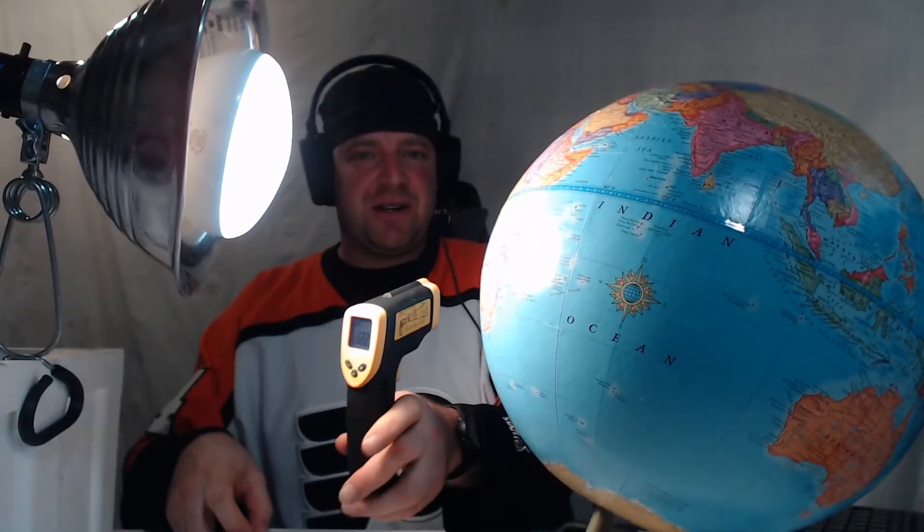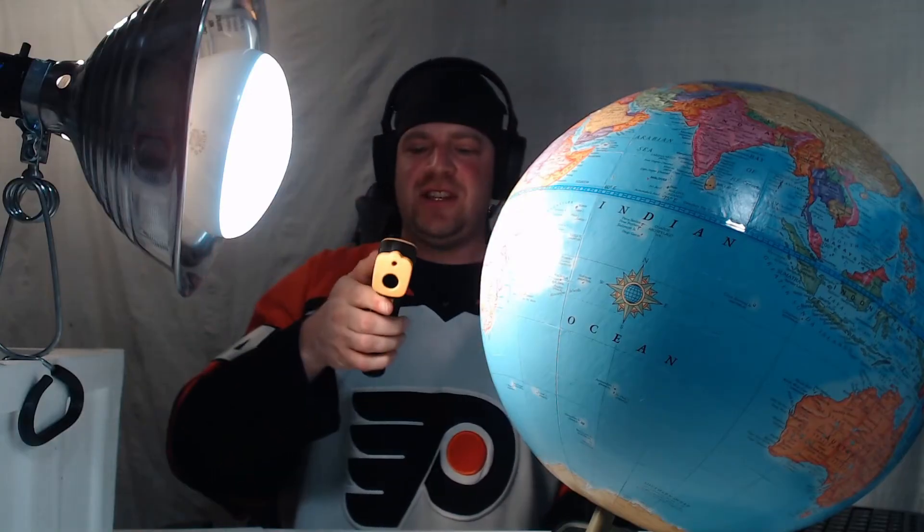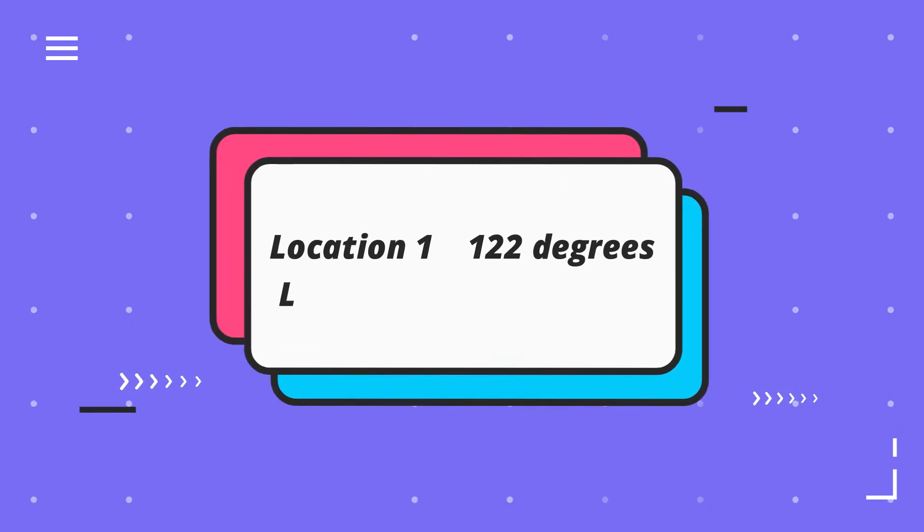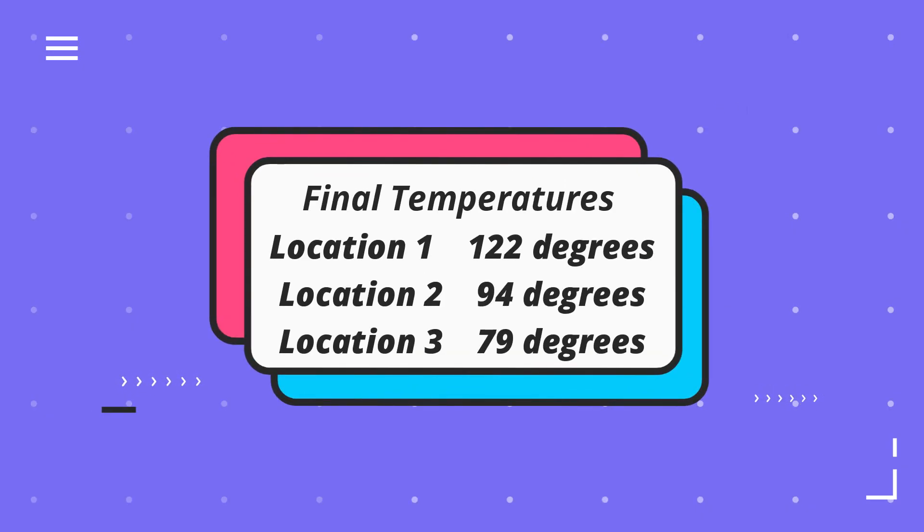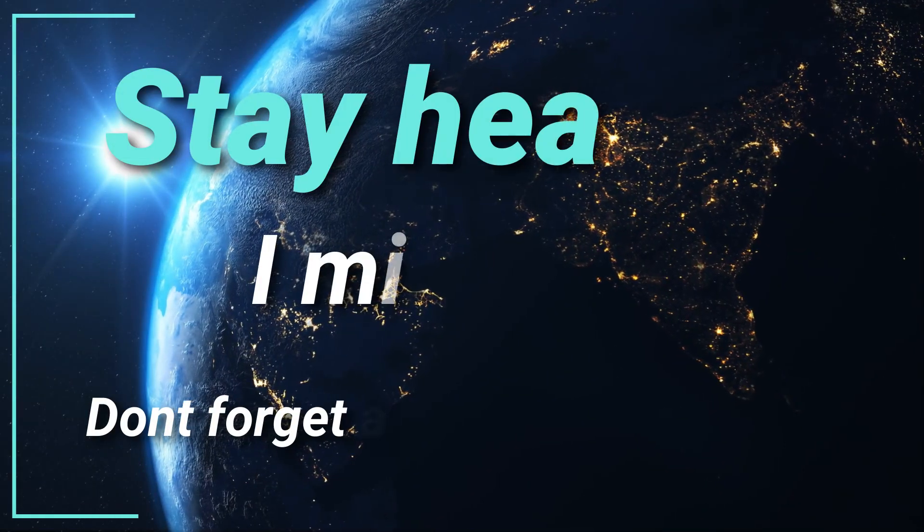For our final reading: at the equator it's now 122 degrees — it's getting hot. At location two we're still at 94.6 degrees. And at location three, we're still at 79 degrees. Using just this simple experiment of a globe and a heat lamp, we can show that the earth is not heated evenly because of the curvature of the earth. It's the science.